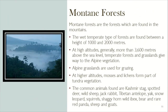Mountain Forest: these forests are found in the mountains. The wet temperate type of forest is found between heights of 1,000 to 2,000 meters. At high altitudes, generally more than 3,600 meters above sea level, temperate forests and grasslands give way to alpine vegetation. Alpine grasslands are used for grazing.